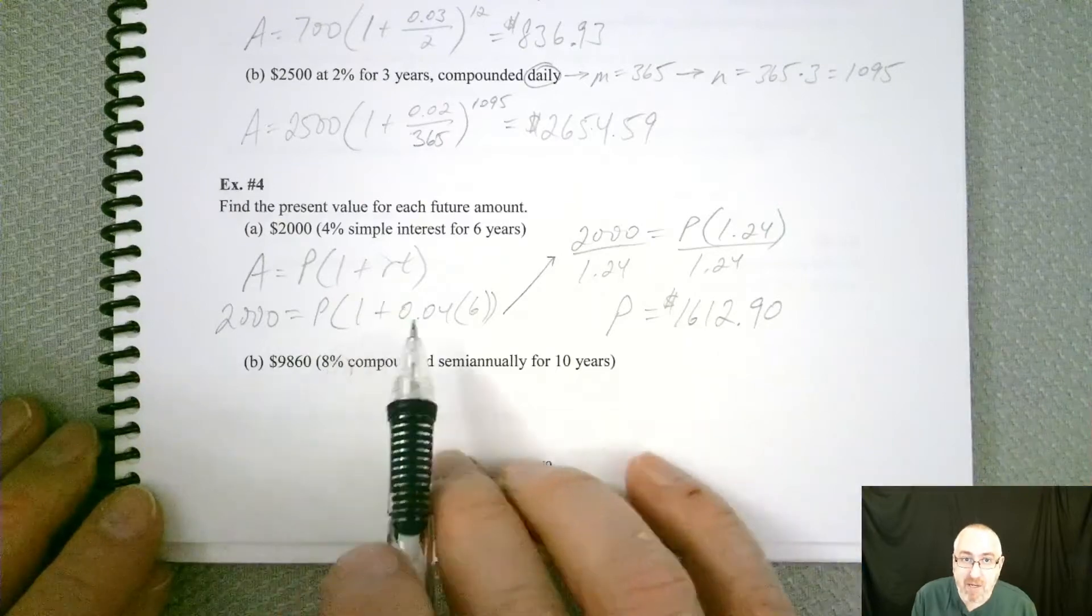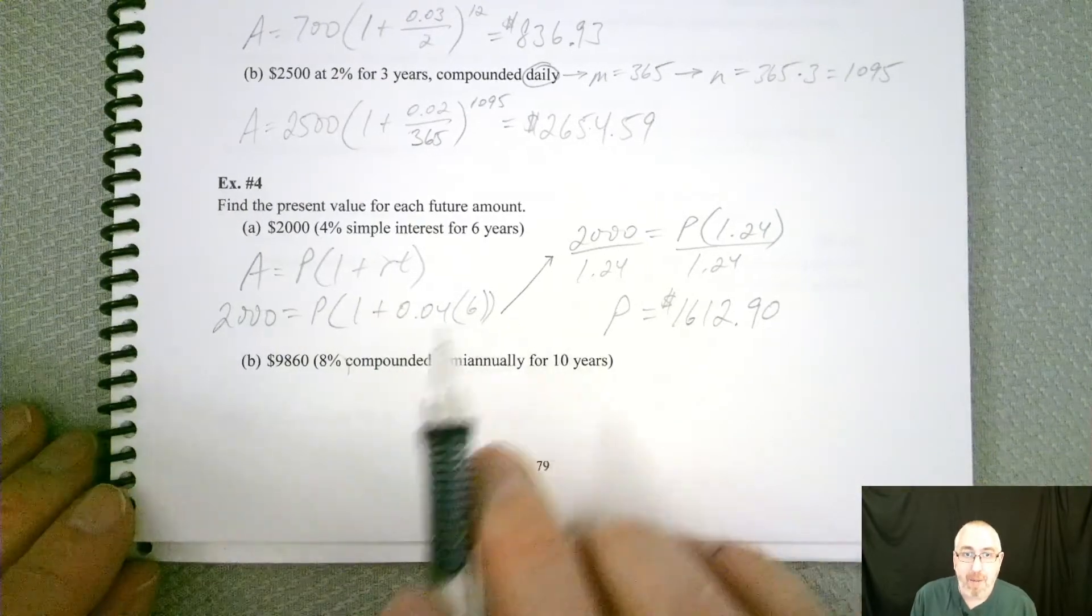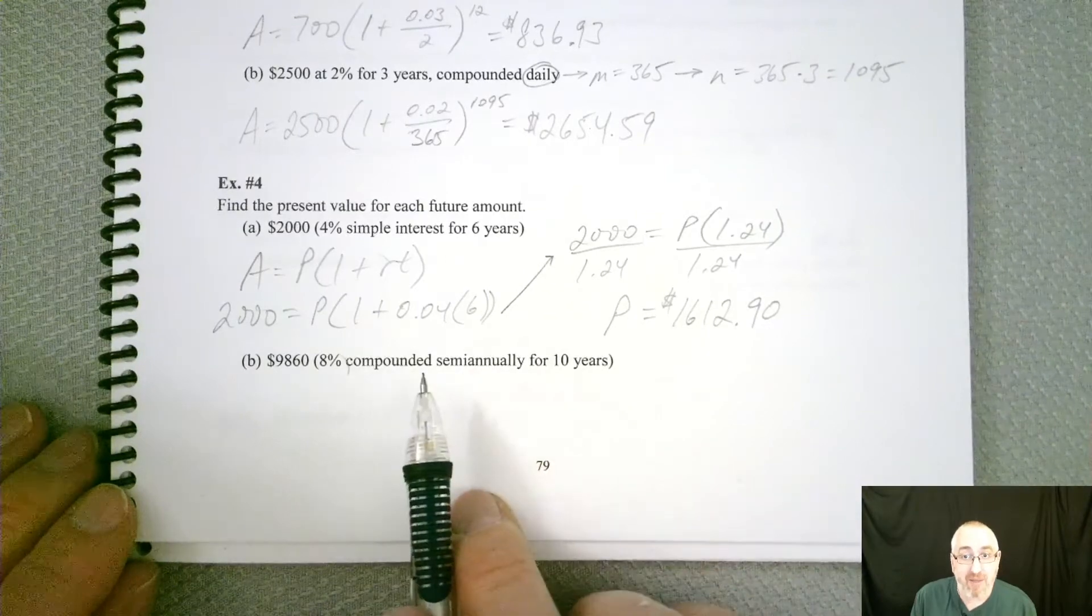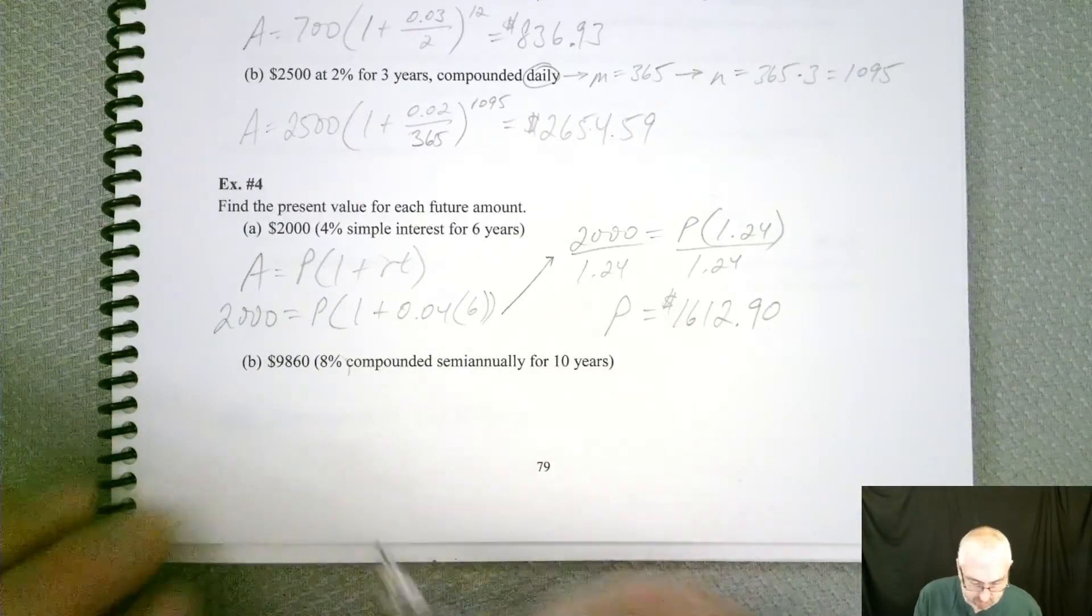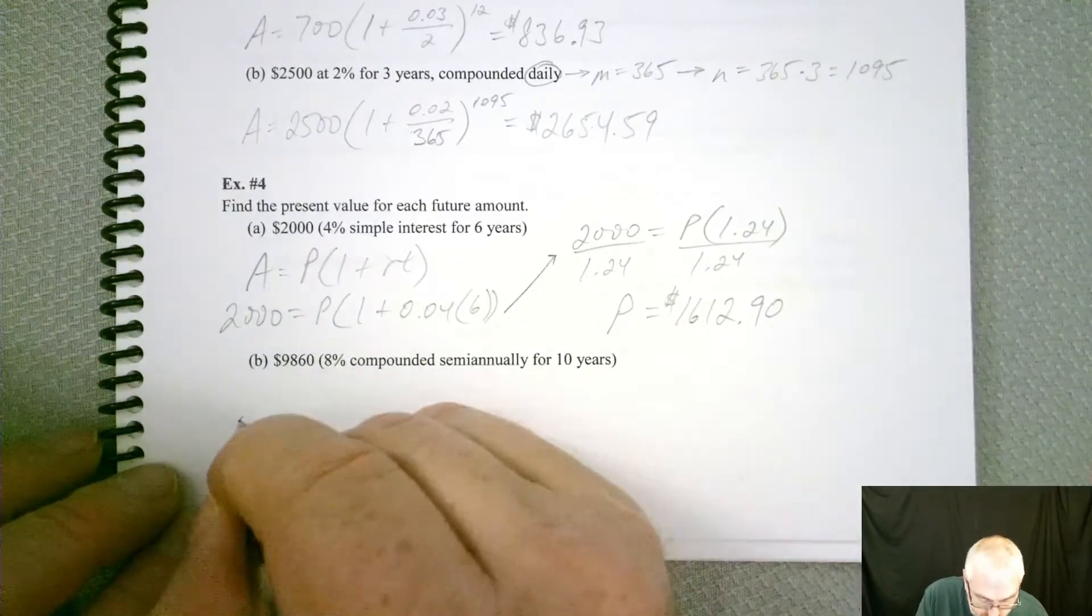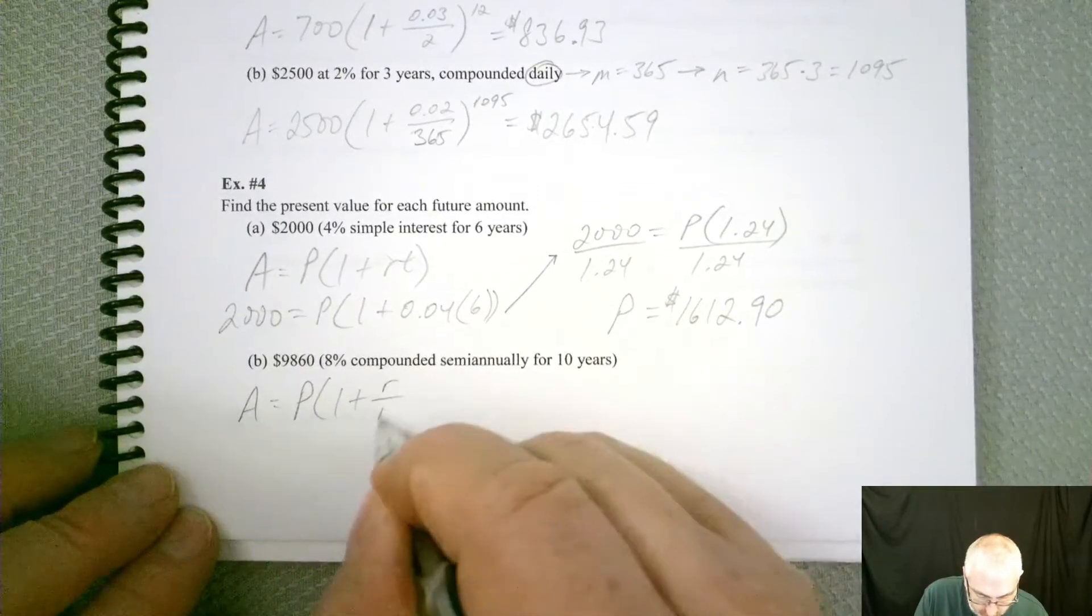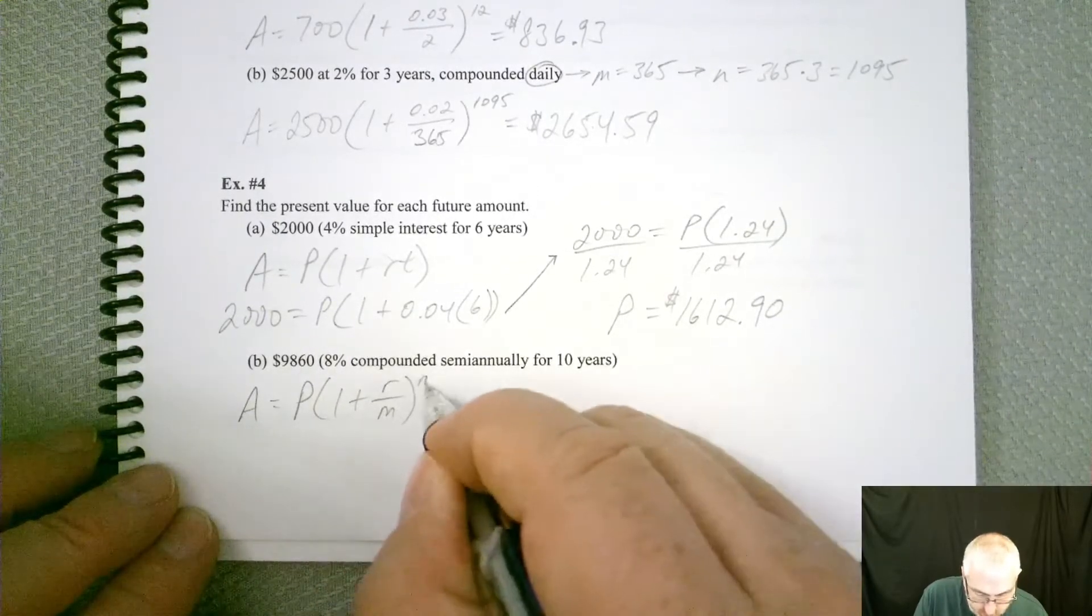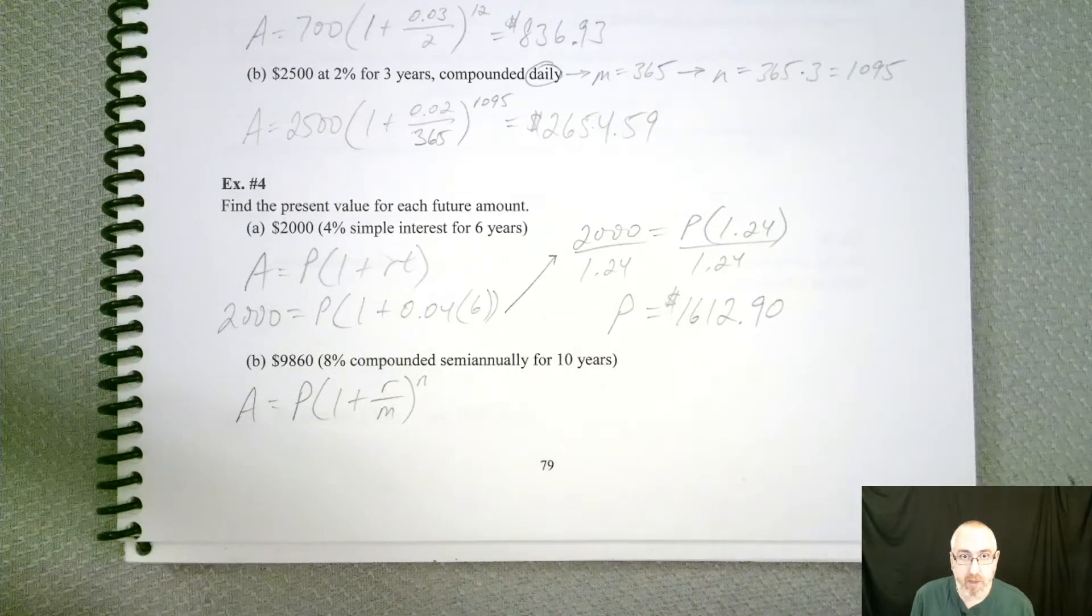Okay. So simple interest is not as bad because you got a little bit more simple equation. But remember, if we're compounding, that's when it gets a little bit yuckier. So let's see how this one would work. So it's compounded. So we know we have to use A equals P times one plus r over m to the n. So let's see if we can plug in some of these numbers.